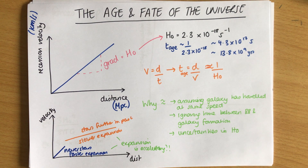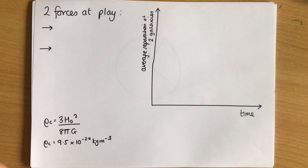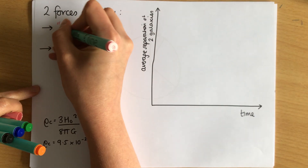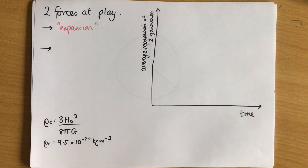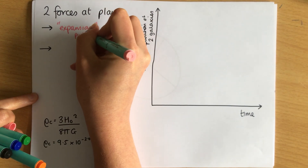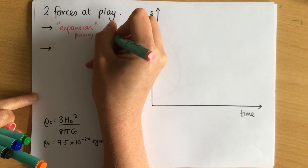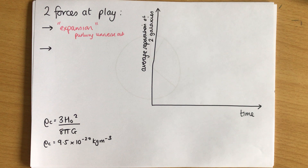We've used Hubble's constant to work out the age of the universe, and we can see from the graph that expansion is accelerating. To understand the fate of the universe we need to consider two main forces: expansion - which is pushing the universe outward (like blowing air into a balloon) - and gravity, which depends on the mass of the universe and pulls it inward.